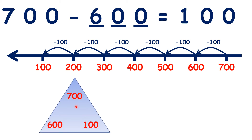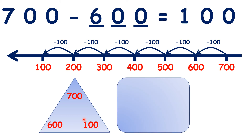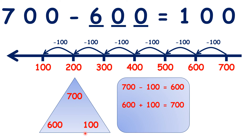Again we can draw a number family triangle. Because we know that 700 minus 600 is 100, we know three related facts. We know that if we subtract one of our bottom numbers from our top number we get our other bottom number, so 700 minus 100 is 600. We also know that we can add our two bottom numbers to get our top number, so 600 plus 100 is 700, and 100 plus 600 is 700.